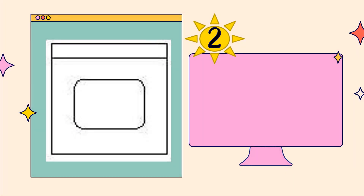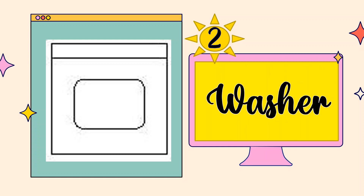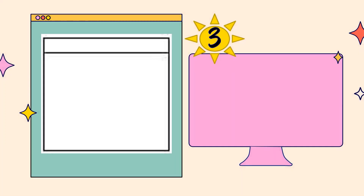Number 2: What kitchen floor plan symbol is this? The correct answer is washer. Number 3: What kitchen floor plan symbol is this? The correct answer is dryer.